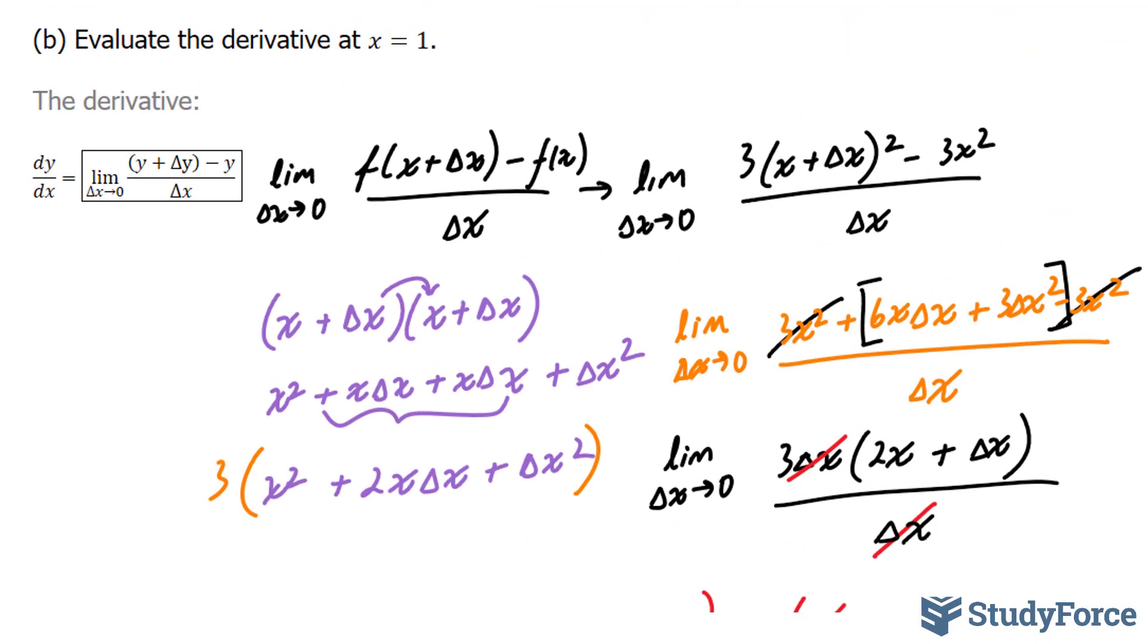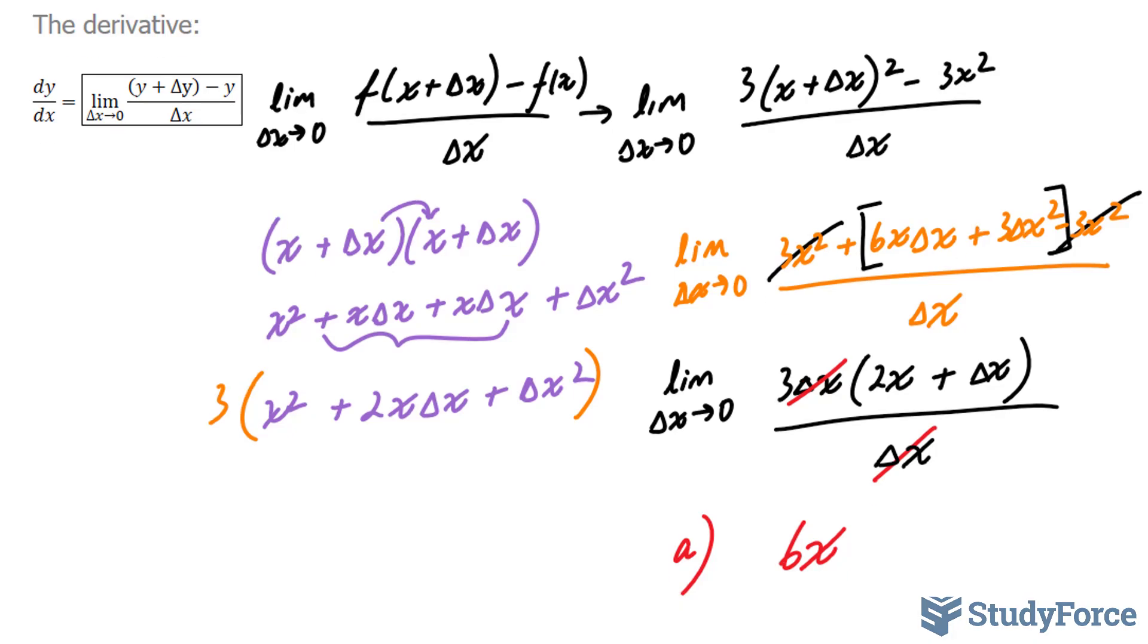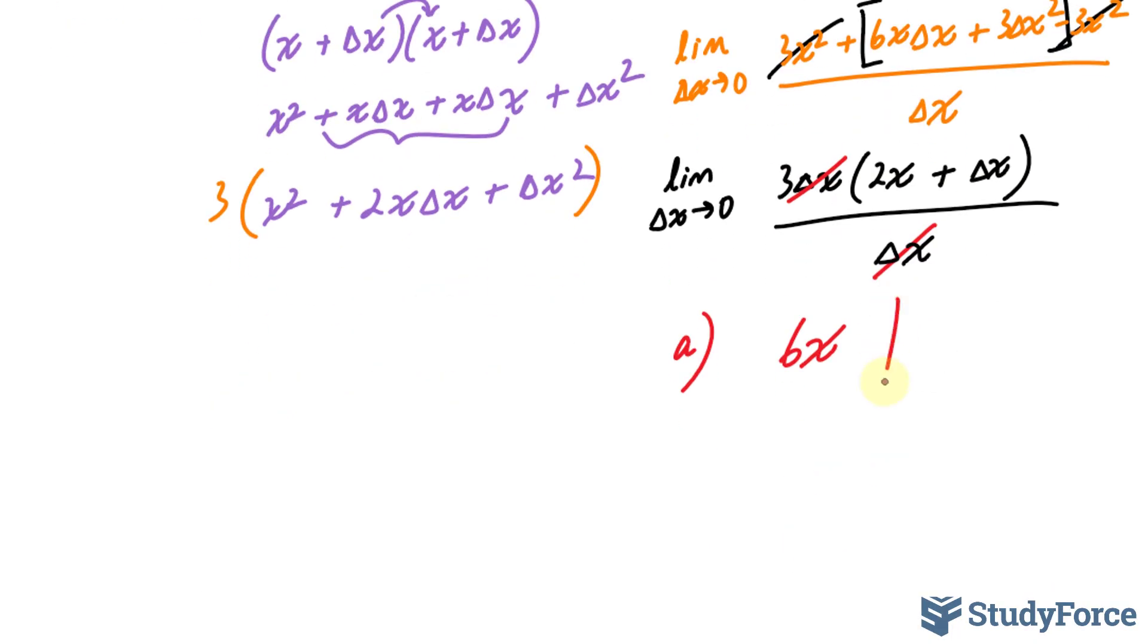In part b, they want us to evaluate the derivative at x is equal to 1. That's not hard to do. At x is equal to 1, b is equal to simply 6. So the rate of change at x equals 1 for the function 3x squared is 6.